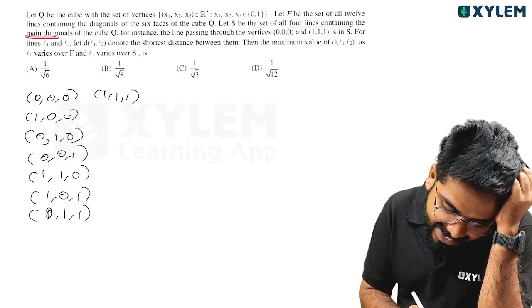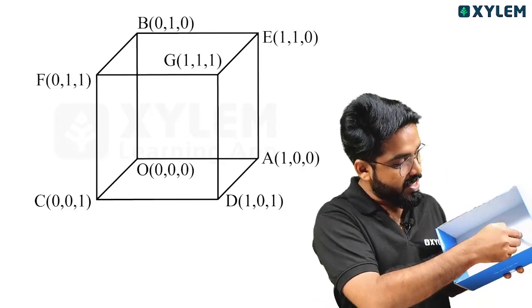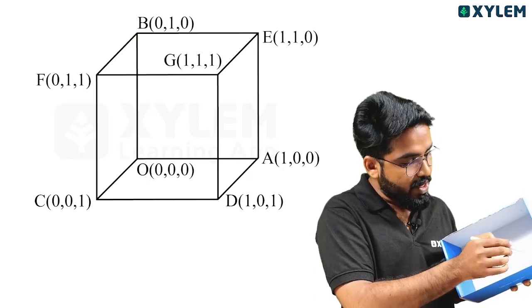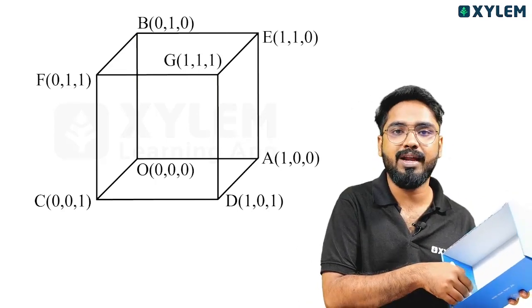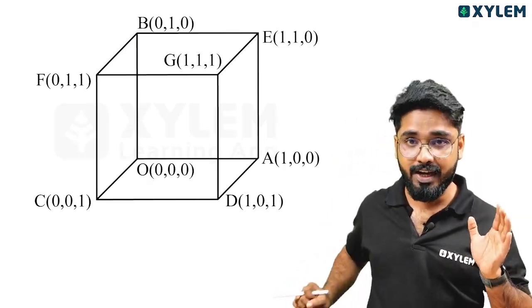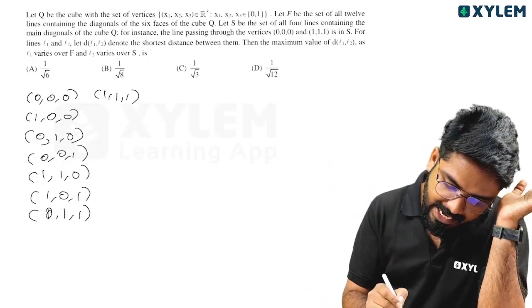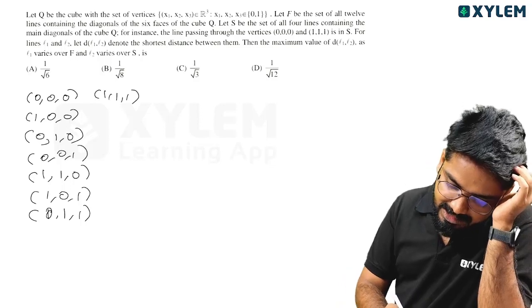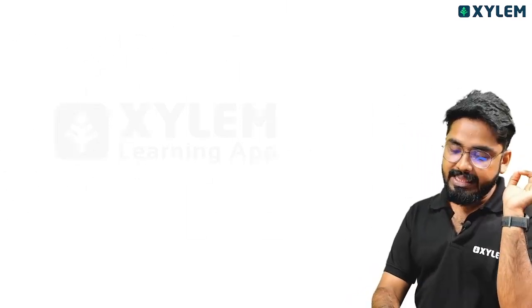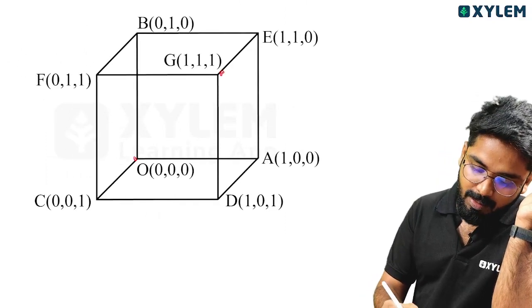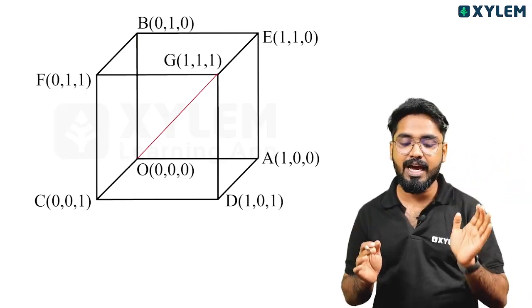Let this be the set of all 4 lines of the main body diagonals. The main diagonal — for example, the line passing through vertices (0,0,0) and (1,1,1) — is in set S. That is the body diagonal.